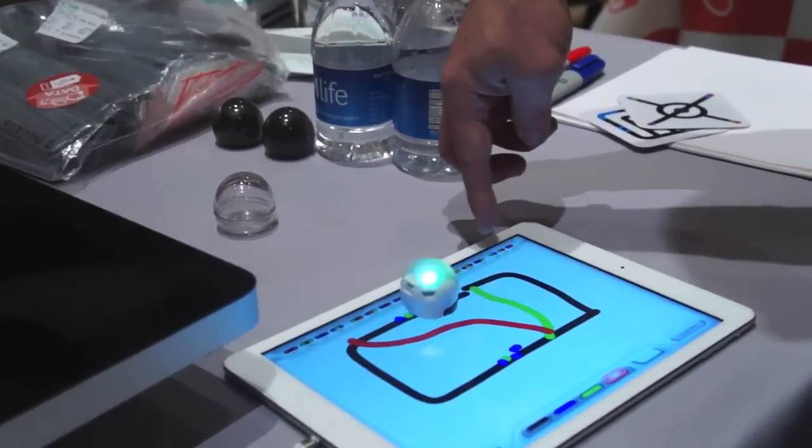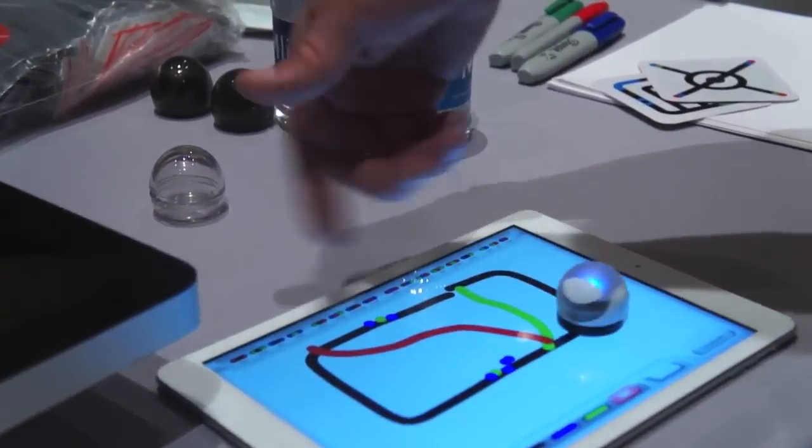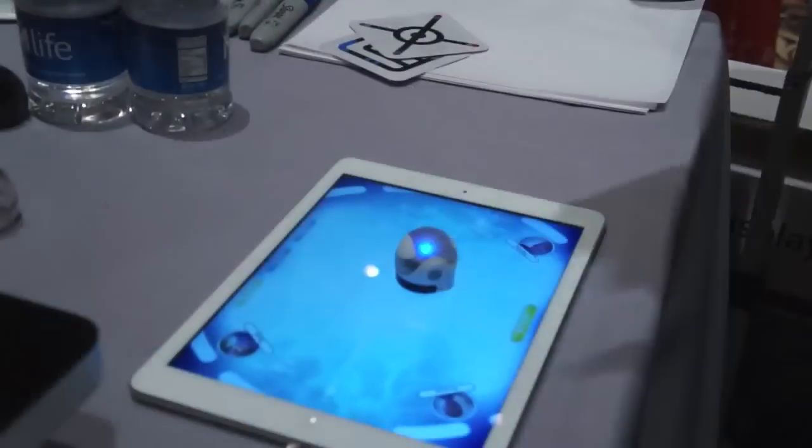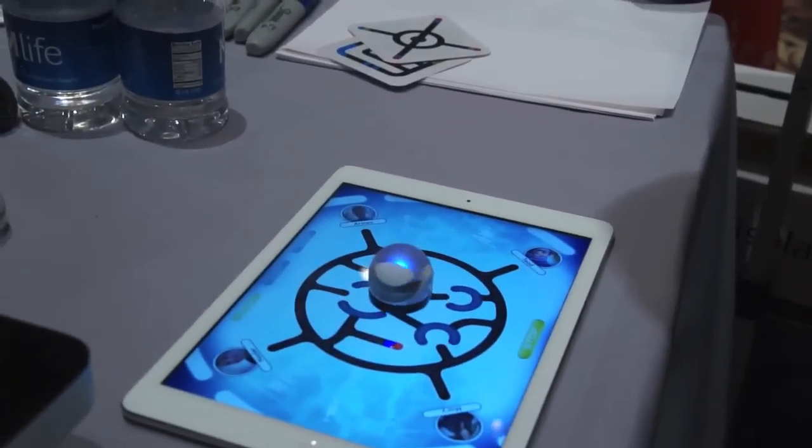So what you're seeing here is it identifying on a digital surface. These are all the different codes that it can actually read. And based on what it reads, it's just going to start doing it.